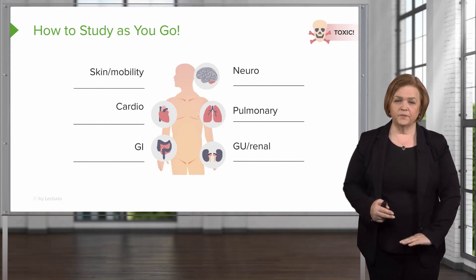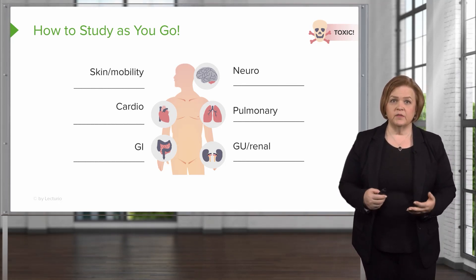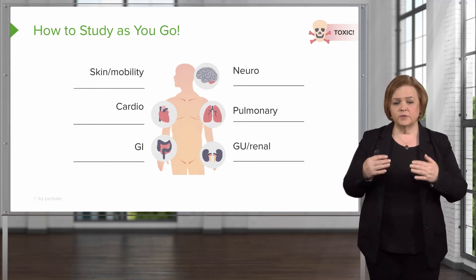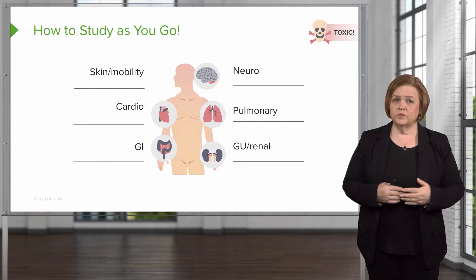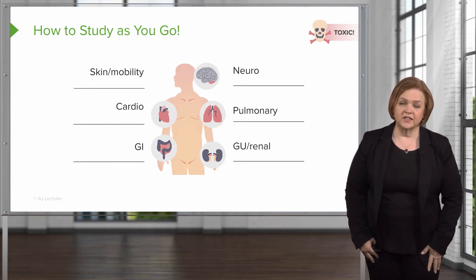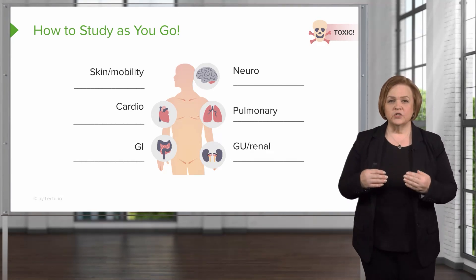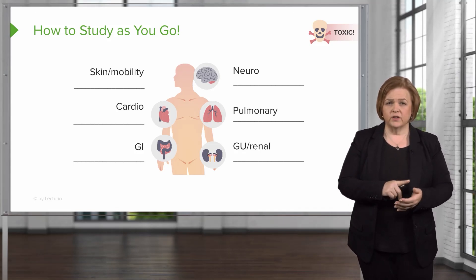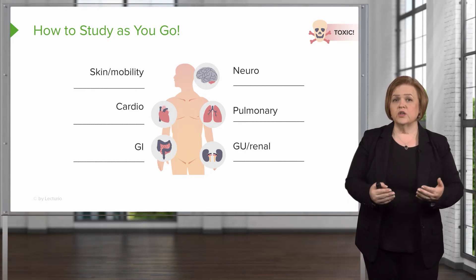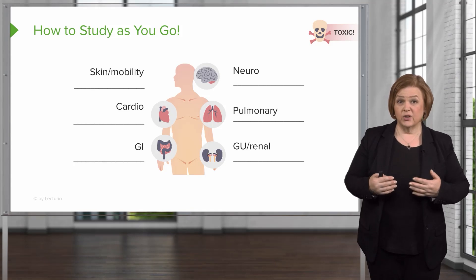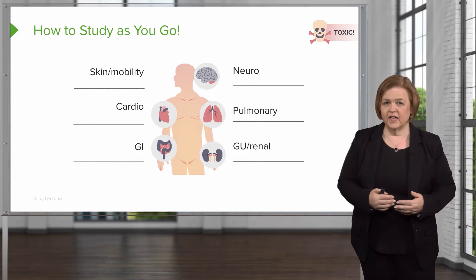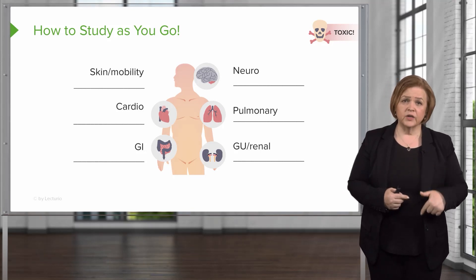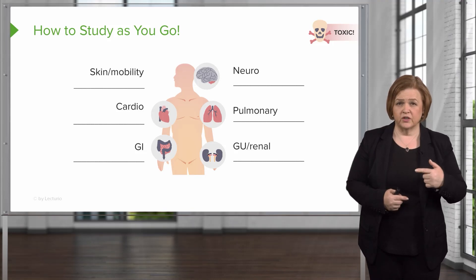Even in practice now, I think about my patients from head, heart, lungs, GI, GU, skin, and mobility — because that helps me make sure I've got a thorough assessment. I use this when making a plan of care, making sure I've thought through every one of their body systems. I review the appropriate labs, I know what meds they're on, I know where their assessments are out of line or abnormal for each system. So I know what my top priorities are for the day, because my goal is always to move the patient to the next level by the end of my shift.